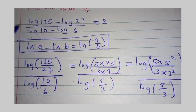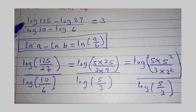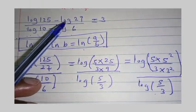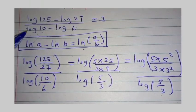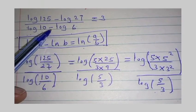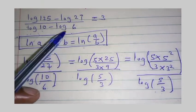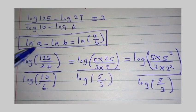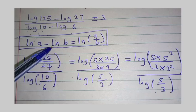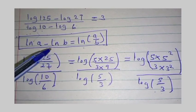So the result of working this gives us 3. Thanks so much for learning with me on how to find the value of log of 125 minus log of 27 divided by log of 10 minus log of 6.